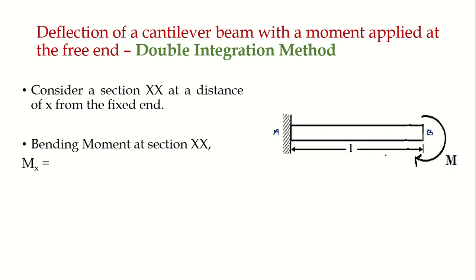We want to find the deflection at the free end, which is yB — we denote deflection by y. The first step is to consider a section XX at a distance of small x from end A. The bending moment at section XX has only one moment acting — since it is a hogging moment, the sign convention gives us Mx = -M.